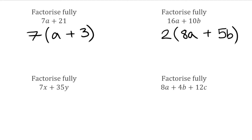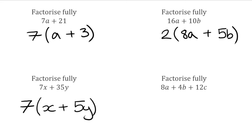For the next expression, we've got 7 and 35, so the common factor there would be 7. Again, no common letter terms as we have an x on the left and a y on the right. Opening the bracket: we need 7x, which is 7 multiplied by x, then plus. We need 35y, which is the same as 7 multiplied by 5y. And that would be the answer for that one.